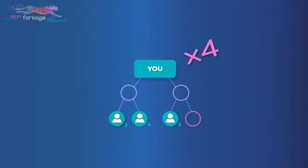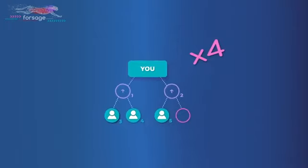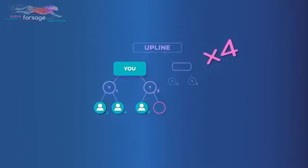Income in X4 we get from the second line. Partners who occupy two places below you in the first line are two places in the second line of your upline. A 100% payment goes to the wallet of your higher partner. You also receive income from the second line, 100% from four partners.